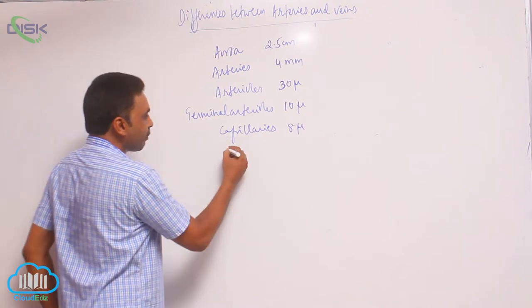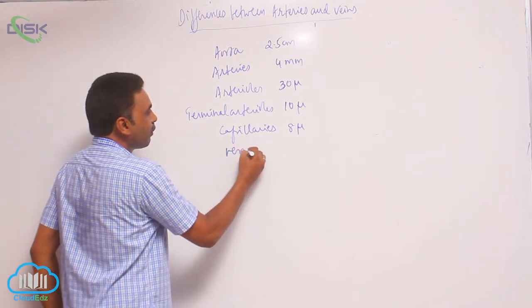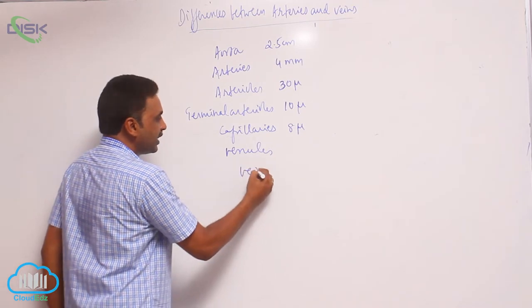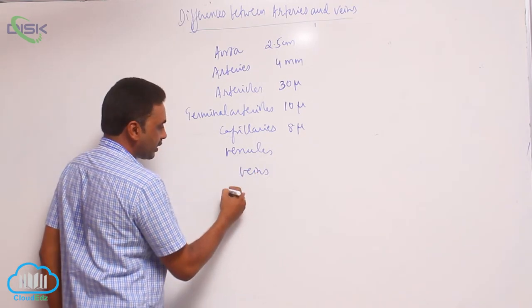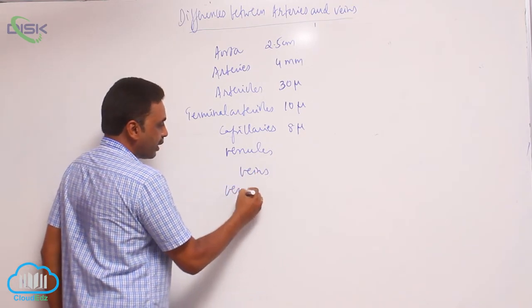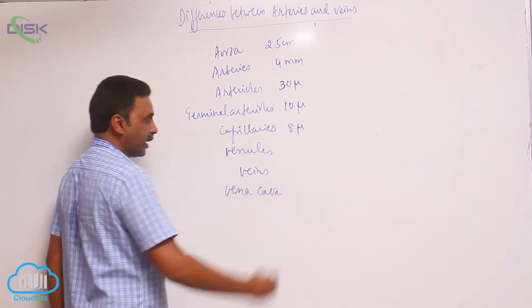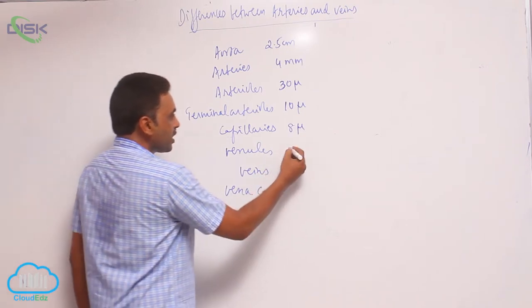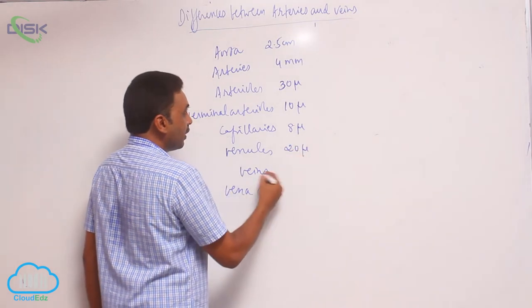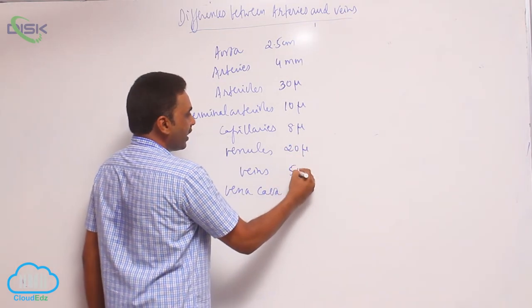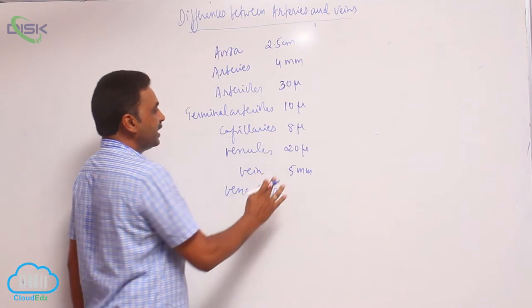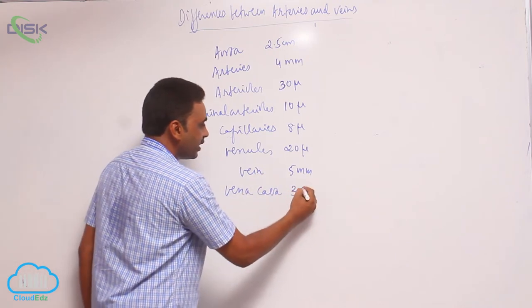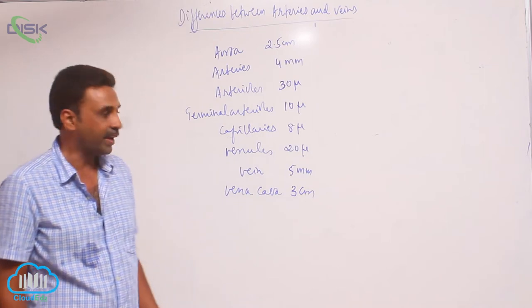The capillaries combine together to form venules, and from that veins originate, and they combine together to form the vena cava. Venules are around 20 microns, each vein is around 5 millimeters, and the vena cava is around 3 centimeters in diameter.